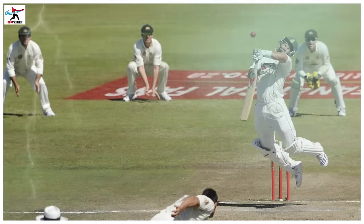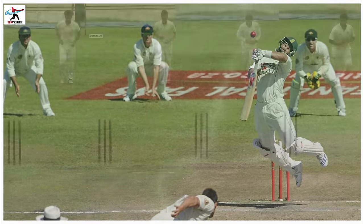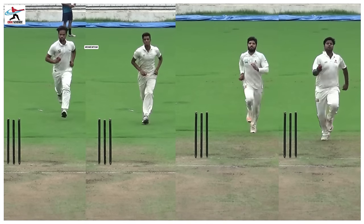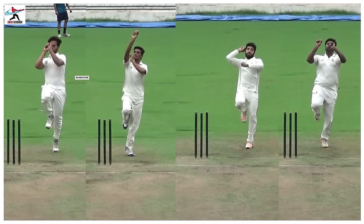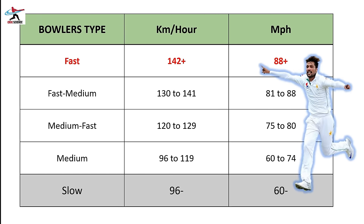तो चलिए मेरे साथ इस सफर पर जहां हम एक fast baller के सभी पहलुओं को देखेंगे. Fast balling means एक ऐसा bowler जो तेज गति से लगातार ball डालता है — पर सवाल यह पैदा होता है कि कितनी तेज गति से? तो आइए सबसे पहले हम speed के आधार पर ballers के types को समझते हैं. 96 km प्रति घंटे से नीचे के bowler को slow baller, 130 से 141 km प्रति घंटे के bowler को fast medium, और उससे ऊपर के bowler को fast baller कहते हैं.